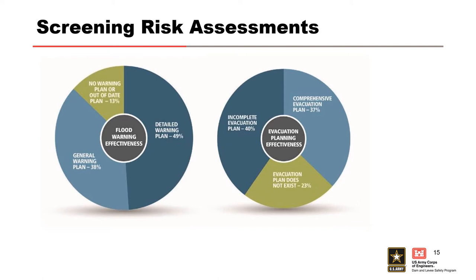Another output from risk assessments is understanding the warning and evacuation process — specifically, how effective flood warning might be. For every area behind our levies, we collected what kind of warning plan the emergency management agency has in place: whether it's a levy-specific plan or a more general all-hazards warning plan. Similarly, we captured how much evacuation planning has been done. This can be very useful information for re-engaging with sponsors and talking with FEMA about needs across the nation.